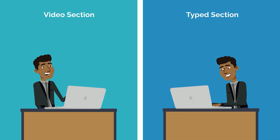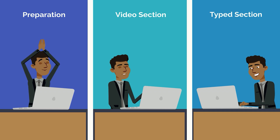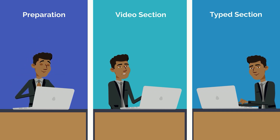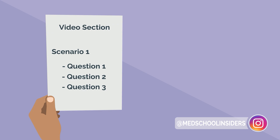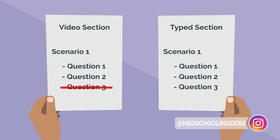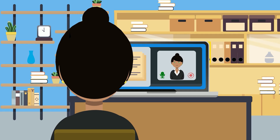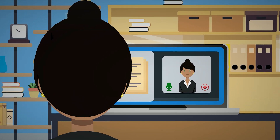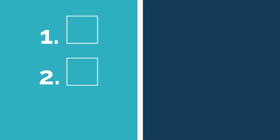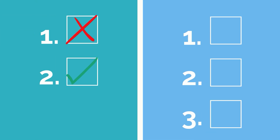Use this change to your benefit. It means you can take time leading up to your test to ensure you warm up and prepare your speaking voice. Older review materials may still say that there are three questions for each scenario in the video portion of Casper, but there are now only two. There are still three questions per scenario in the typed section. This means there's even more pressure to succeed on the two questions you are given in the video portion, as there's less of a window for error compared to when you had three questions to get your points across.